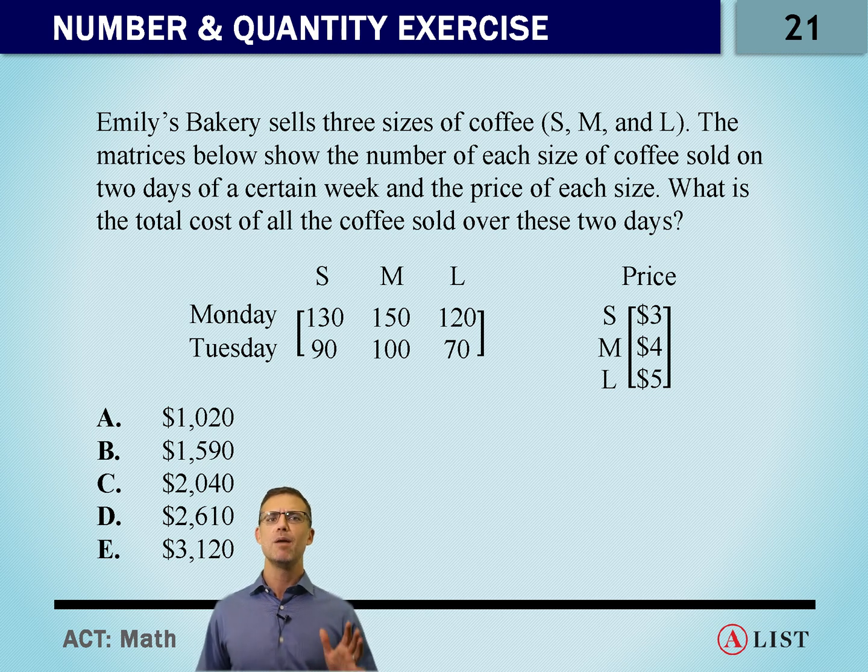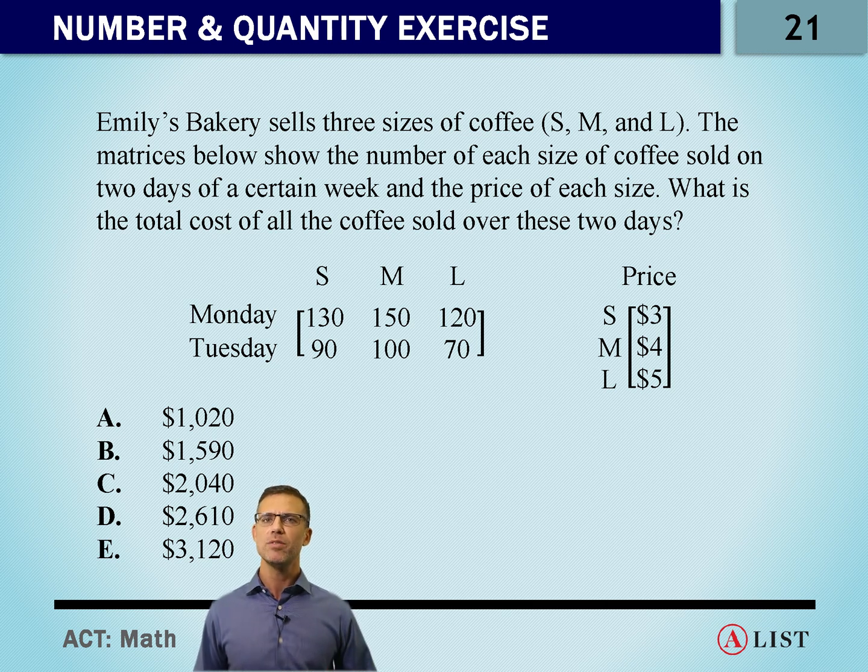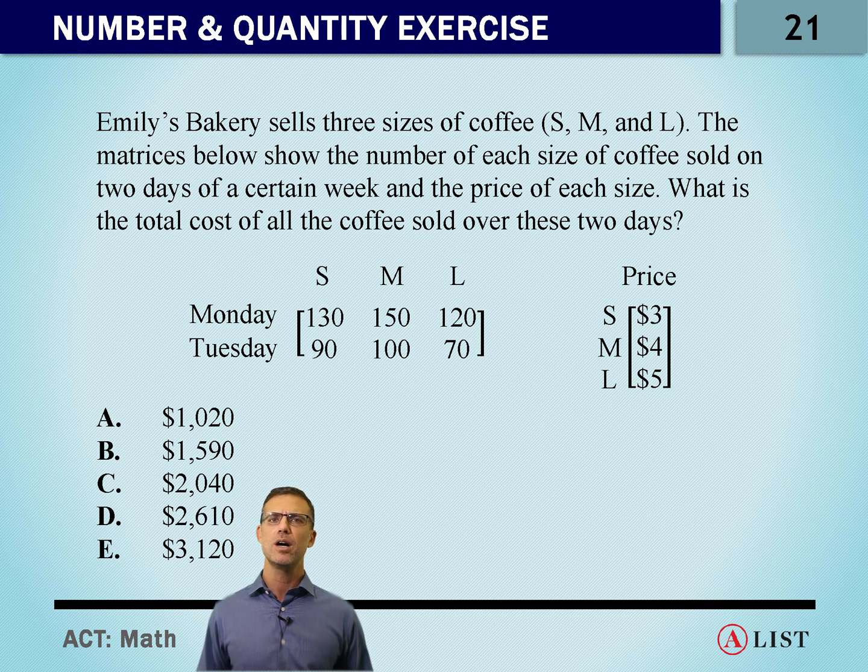The matrices below show the number of each size of coffee sold on two days of a certain week and the price of each size. Of course we have to take a look at the end of the question. What do they want to know? What is the total cost of all the coffee sold over these two days?